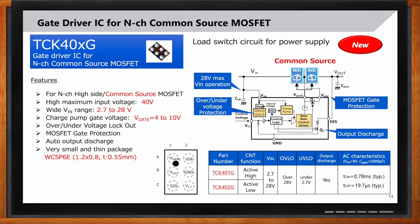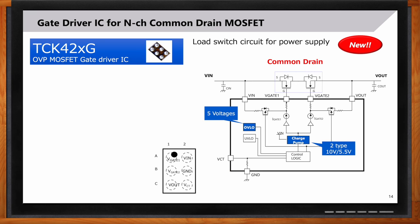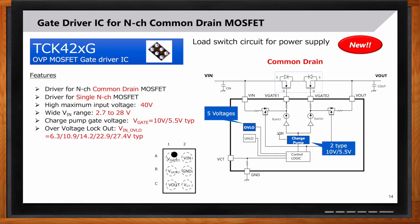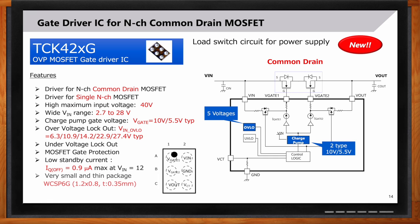For common drain configurations, the TCK42 series is recommended. It has a similar maximum input and drives the FET up to 10 volts with similar features as the TCK40 series. An additional advantage is that it has five different voltage levels for over-voltage lockout, and what makes this part extra special is that we separated the gate pins.